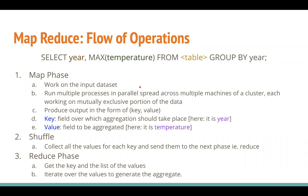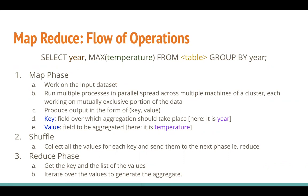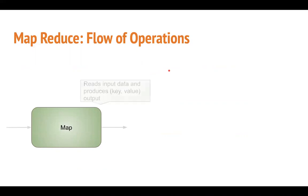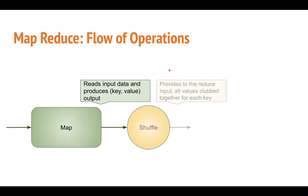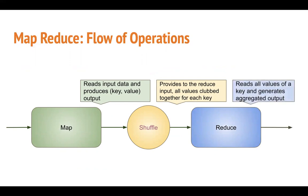The map phase is something you have full control to write the logic for, and the reduce phase is also under the application developer's control. In Hadoop MapReduce, the shuffle is something you don't have to worry about - based on the output key of your map phase, shuffle will take care of collecting all values for the same key together. The flow of operations is very straightforward: map phase reads the input, produces key-value output, which is collected by shuffle, and all values for the same key are pushed to reduce. Reduce gets a key and a list of values and generates some aggregated output.